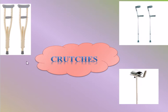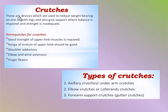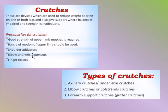First: crutches. These are devices used to reduce weight bearing on one or both legs and give support where balance is impaired and strength is inadequate. Prerequisites for crutches: good upper limb strength and range of motion are required. Shoulder adductors must be strong, and elbow extensors and finger flexors must be adequate to take the weight through the crutches. There are three types: axillary crutches, elbow or forearm crutches, and gutter crutches.